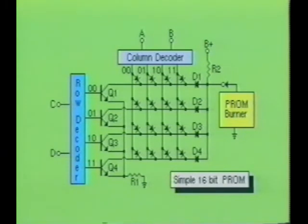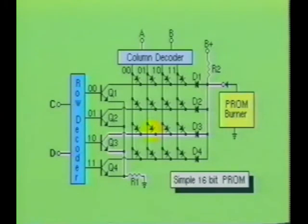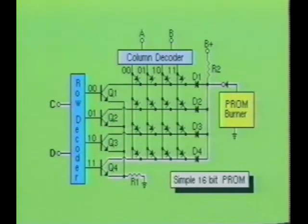Programming the PROM is a very simple process. First, an address is selected by activating the desired row and column lines. Then a jolt of high energy is applied at the desired address. This causes the thin layer of conducting material to burn open, which permanently opens the circuit between the row lines and the column lines. This same procedure is performed at each data address until the entire PROM device has been programmed. While the device is being programmed, the outputs are generally disabled.